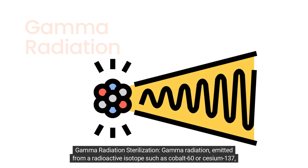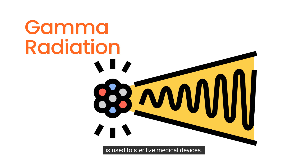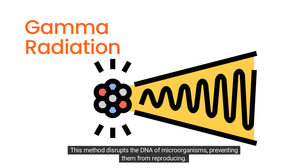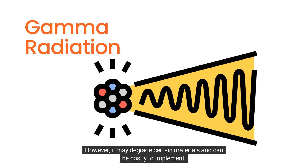Gamma radiation sterilization: gamma radiation, emitted from a radioactive isotope such as cobalt-60 or cesium-137, is used to sterilize medical devices. This method disrupts the DNA of microorganisms, preventing them from reproducing. Gamma radiation can penetrate packaging materials, making it suitable for sterilizing pre-packaged devices. However, it may degrade certain materials and can be costly to implement.